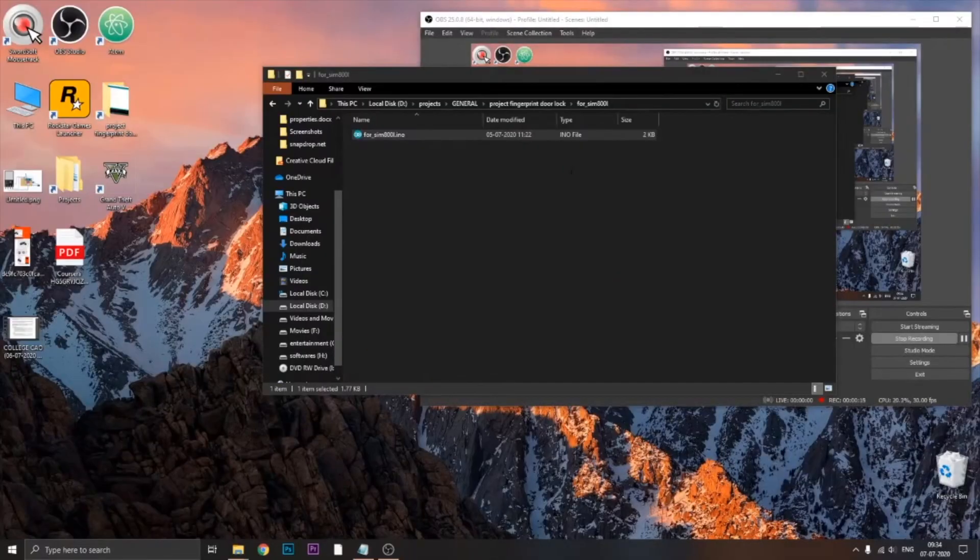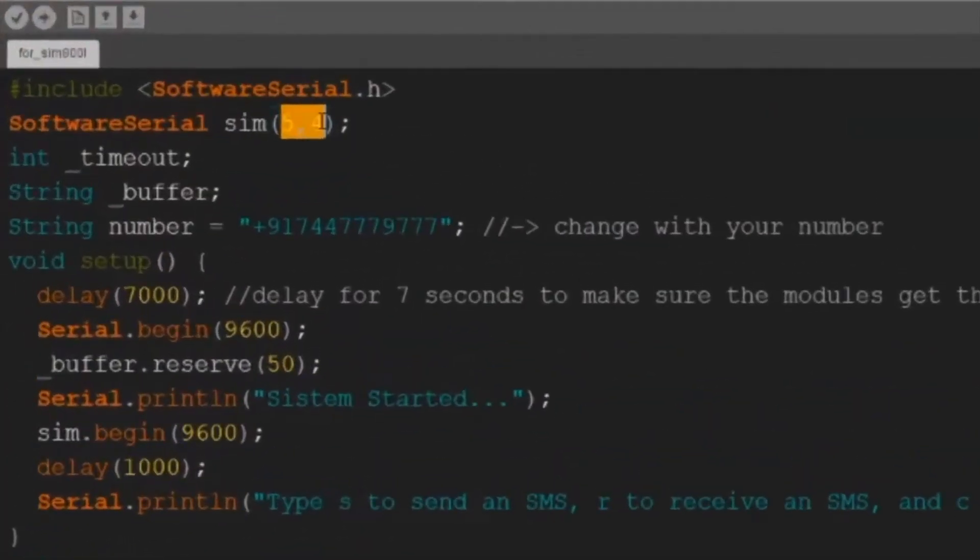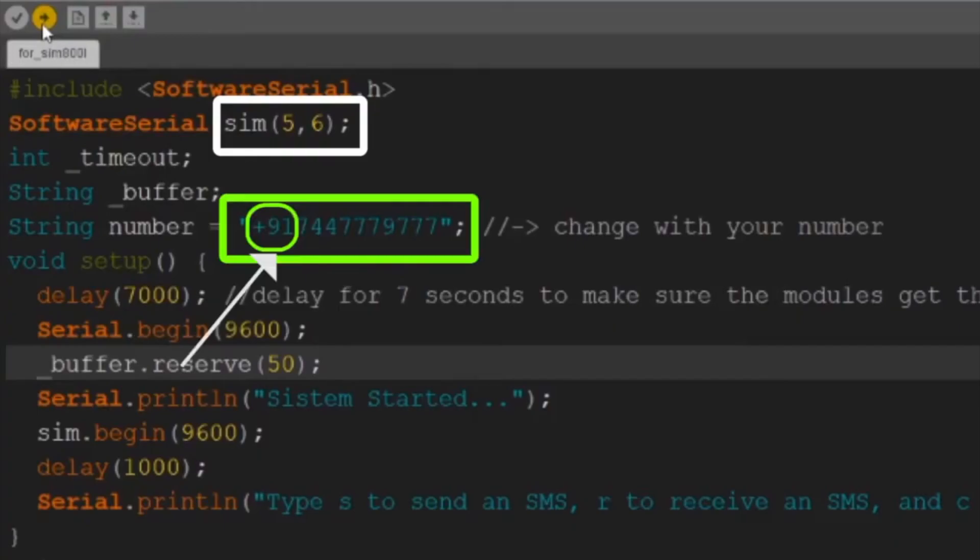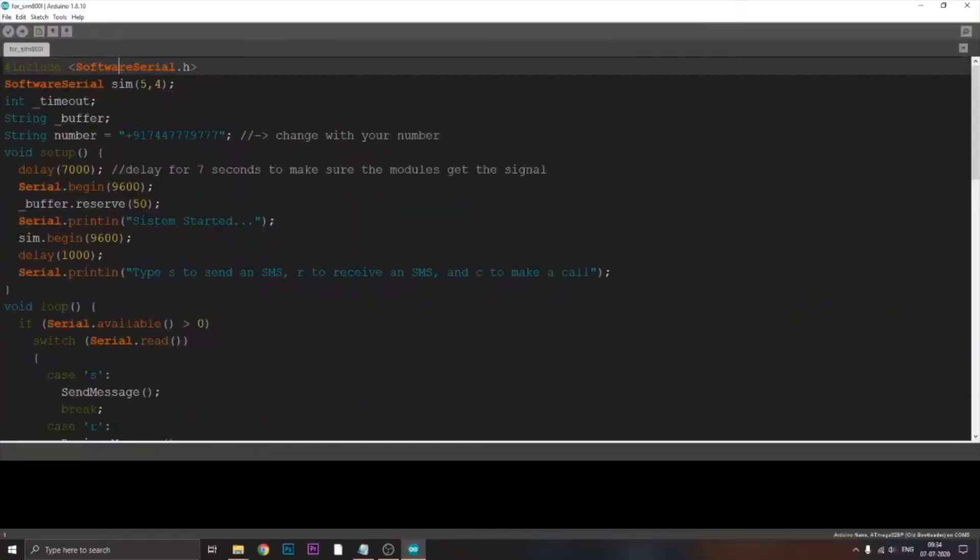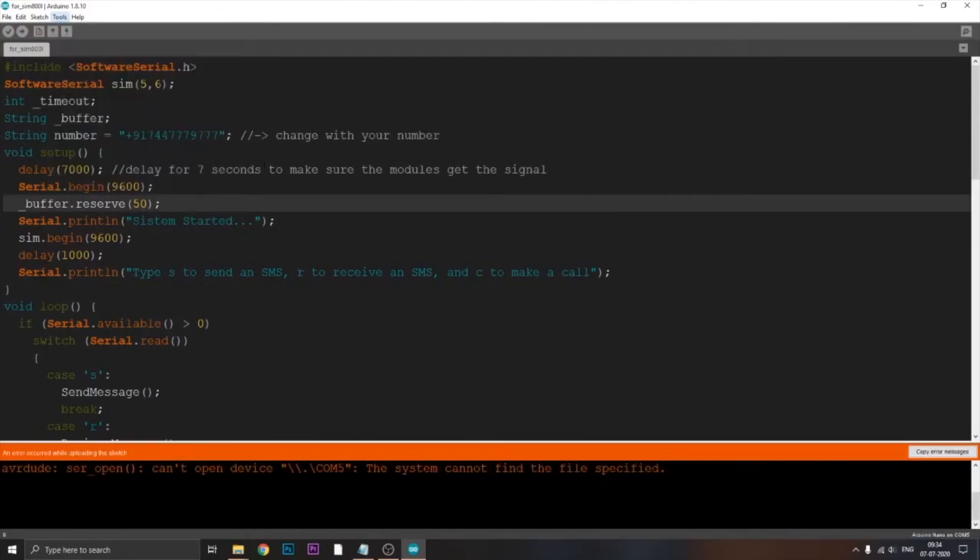It's an Arduino file and in this you have to change two things. The first is the SIM number and the second is your mobile number with your country code. Your country code might be different than mine, so be sure to check it before running the program. Now select the appropriate port in which your Arduino is present and click upload.